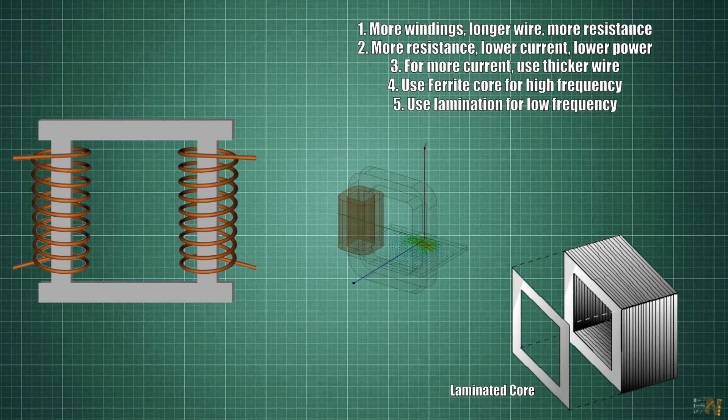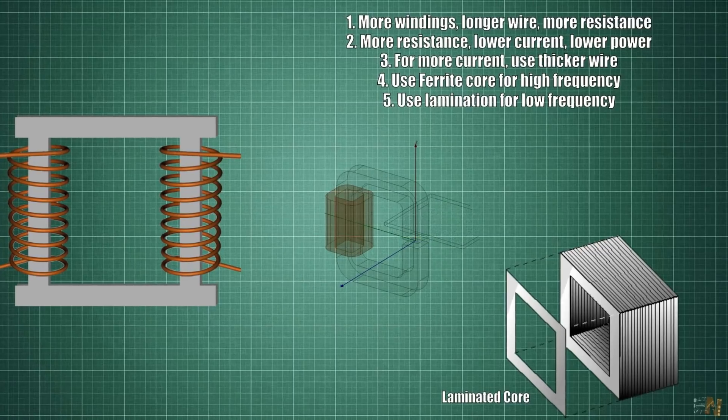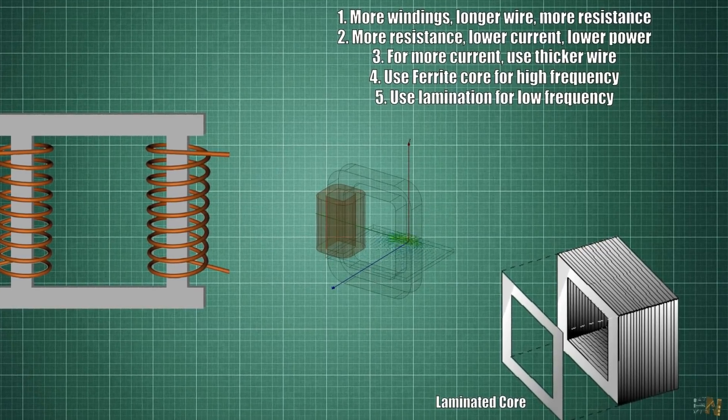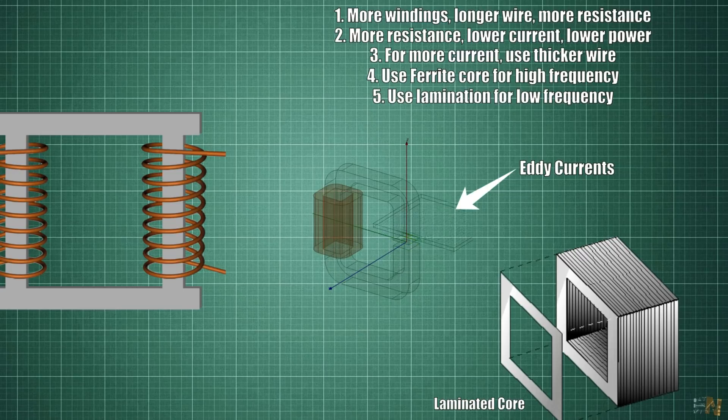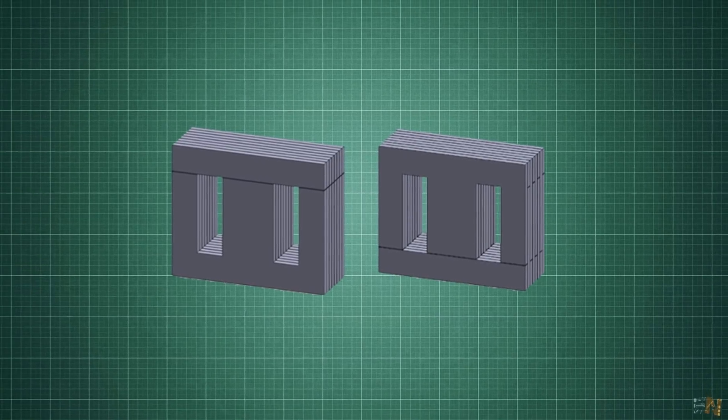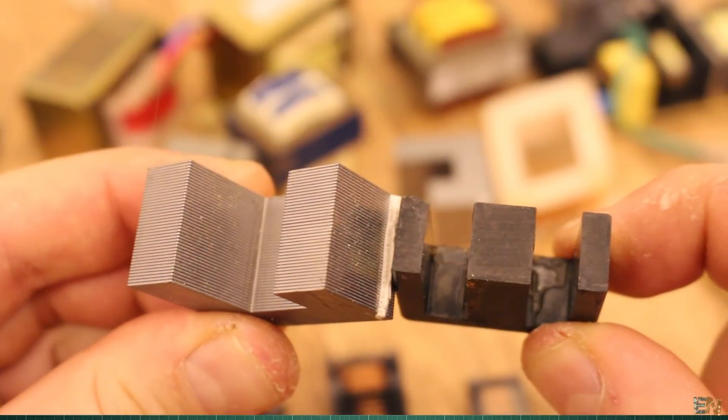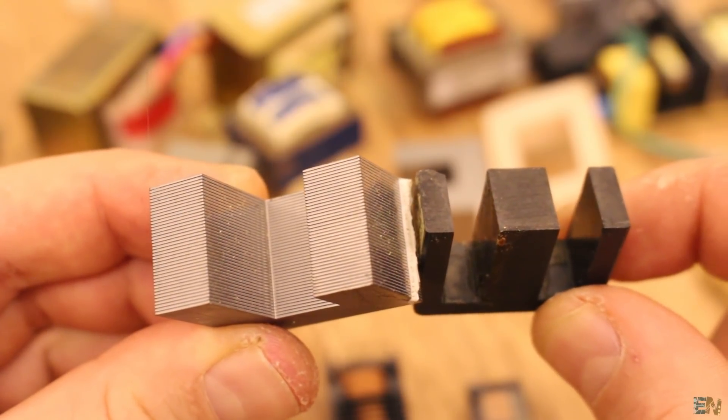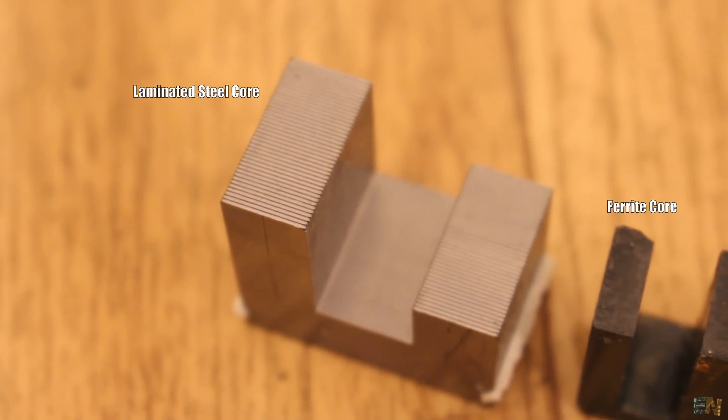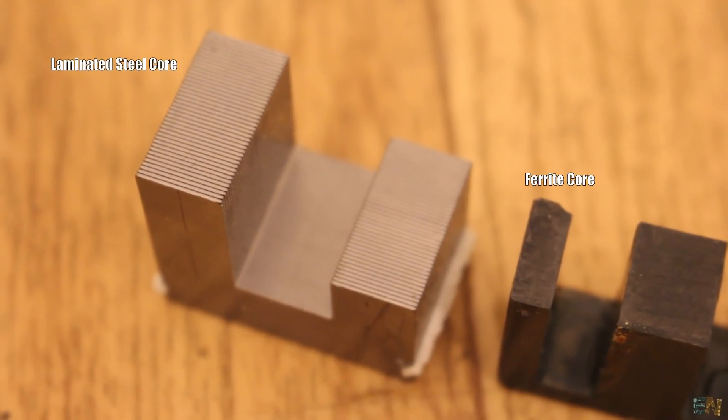With lower frequencies, core material selection is driven by the core saturation considerations. The eddy current losses are low, so steel laminations can be considered. That's why pretty much all the steel transformers are laminated to avoid eddy current problems. With higher frequencies, eddy currents can be significant, so here a ferrite core is commonly used because their high electrical resistivity minimizes the eddy current losses.